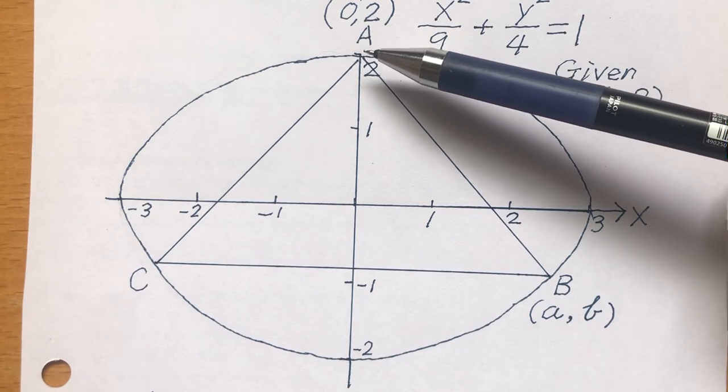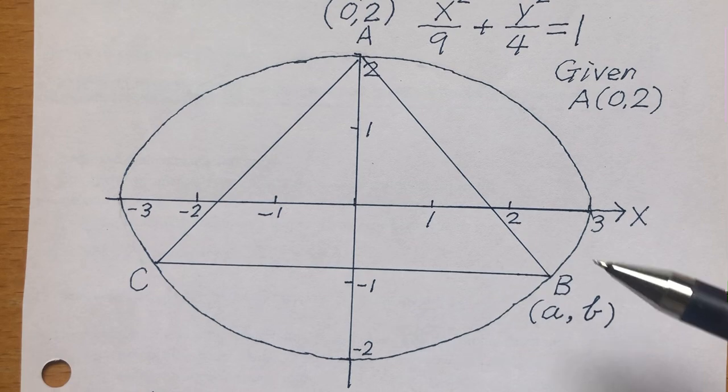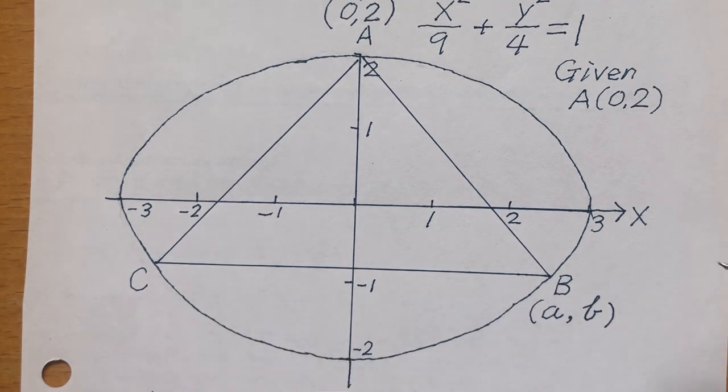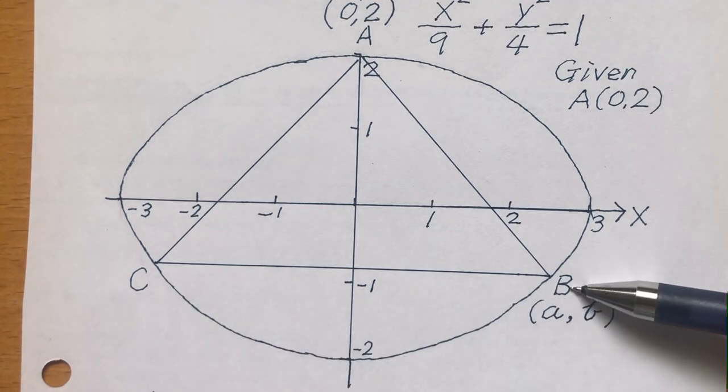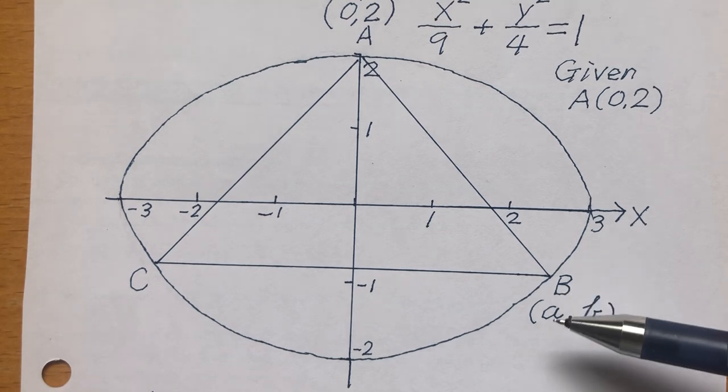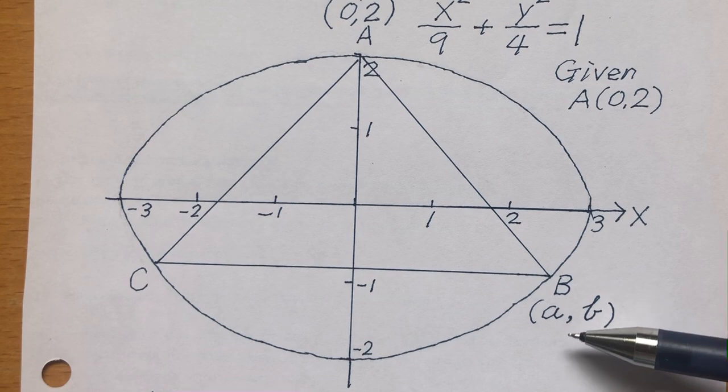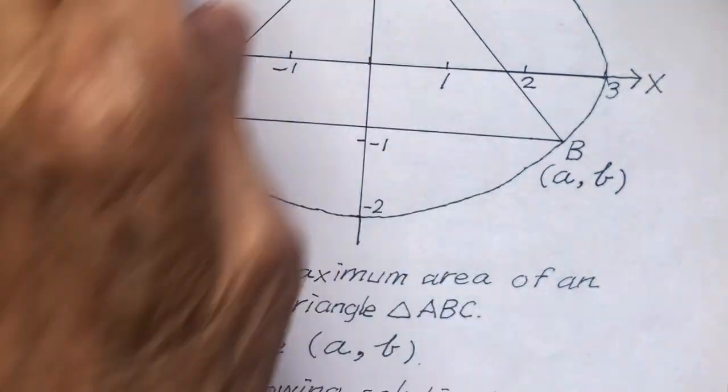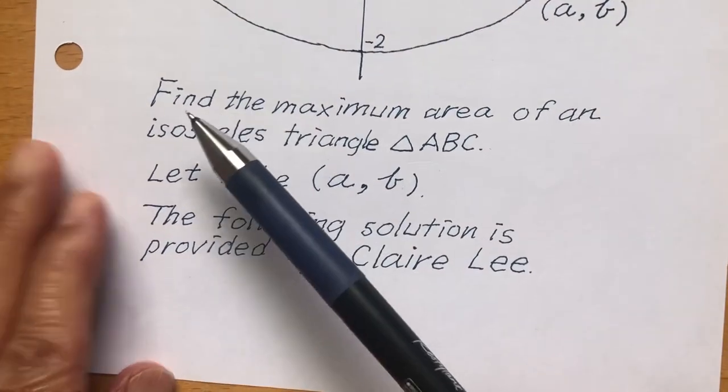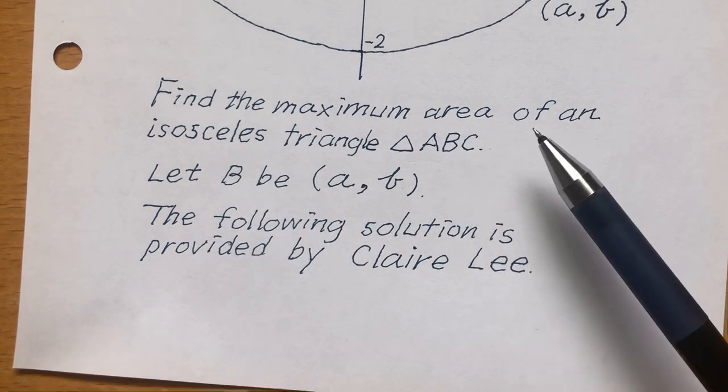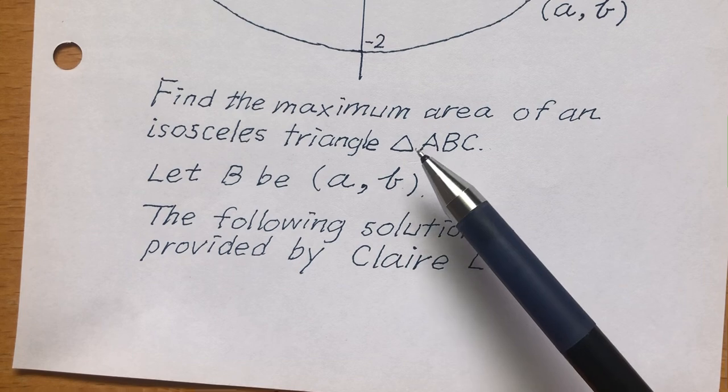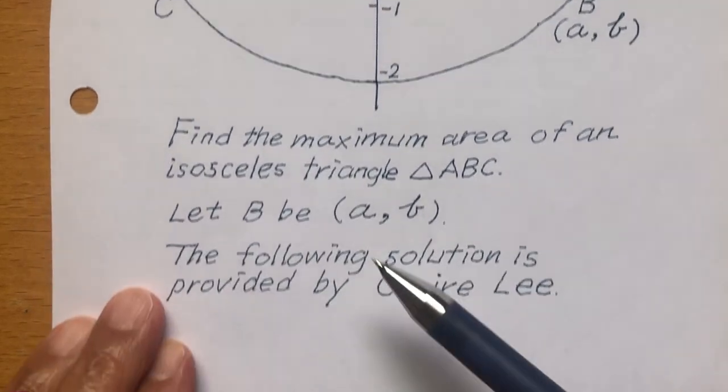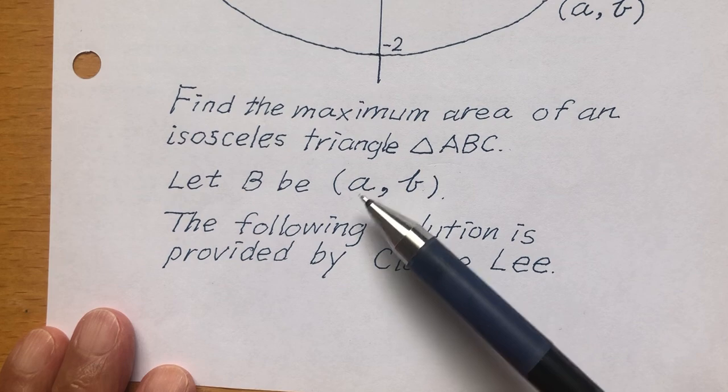The triangle is an isosceles triangle ABC. Point B is not given. Let's say the coordinates of point B are (a,b).